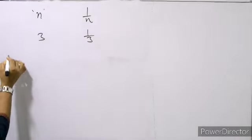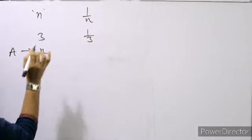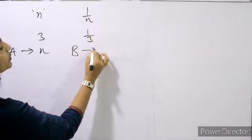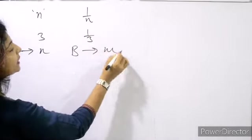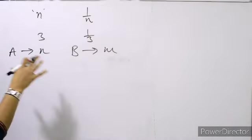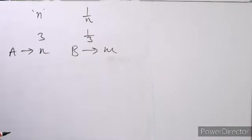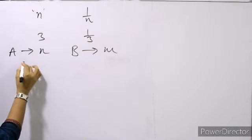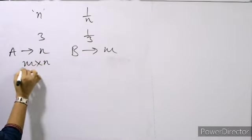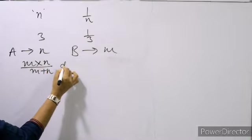If A can do a piece of work in m days and B can do a piece of work in n days, and both are working together, so how much time will it take to finish the work? They'll take m into n divided by m plus n days.